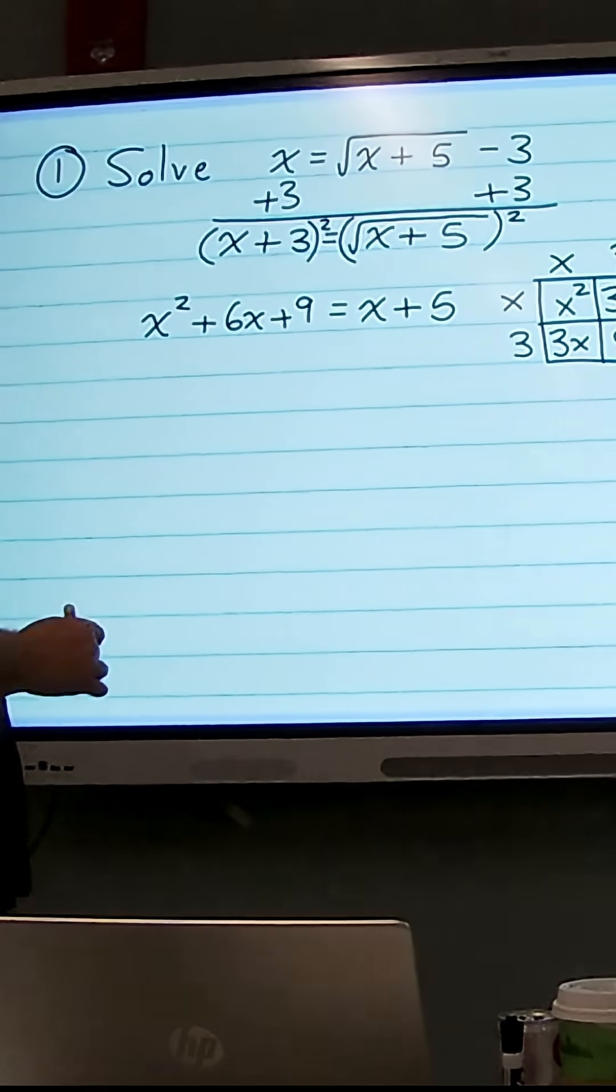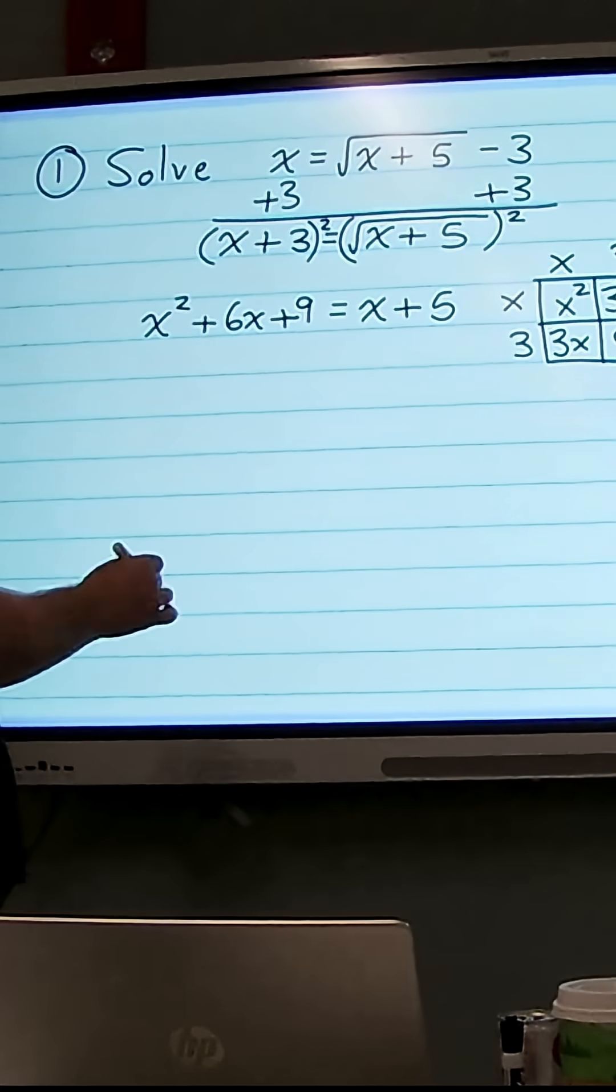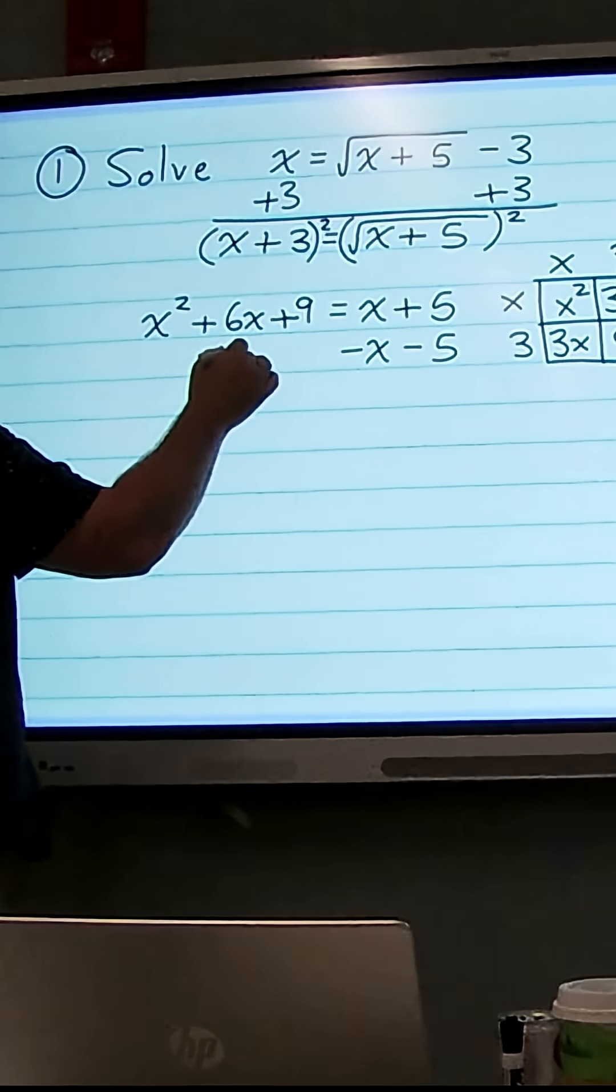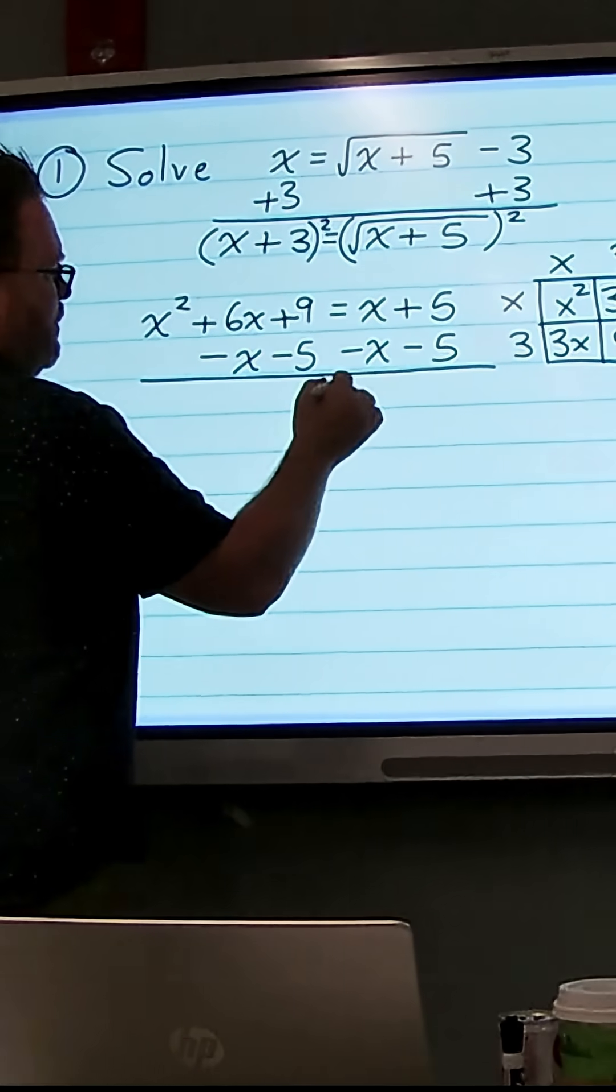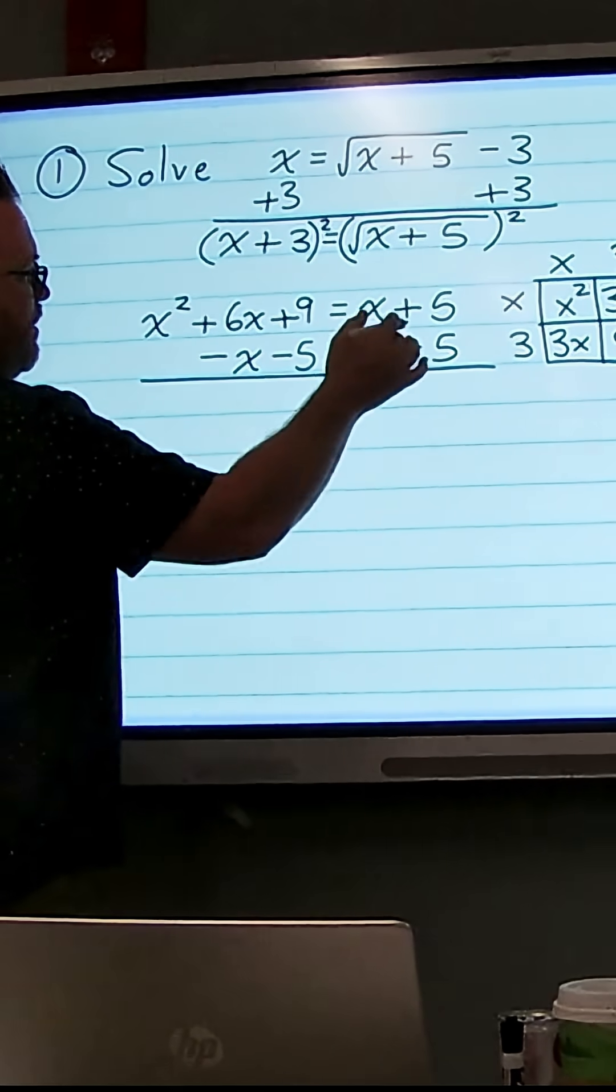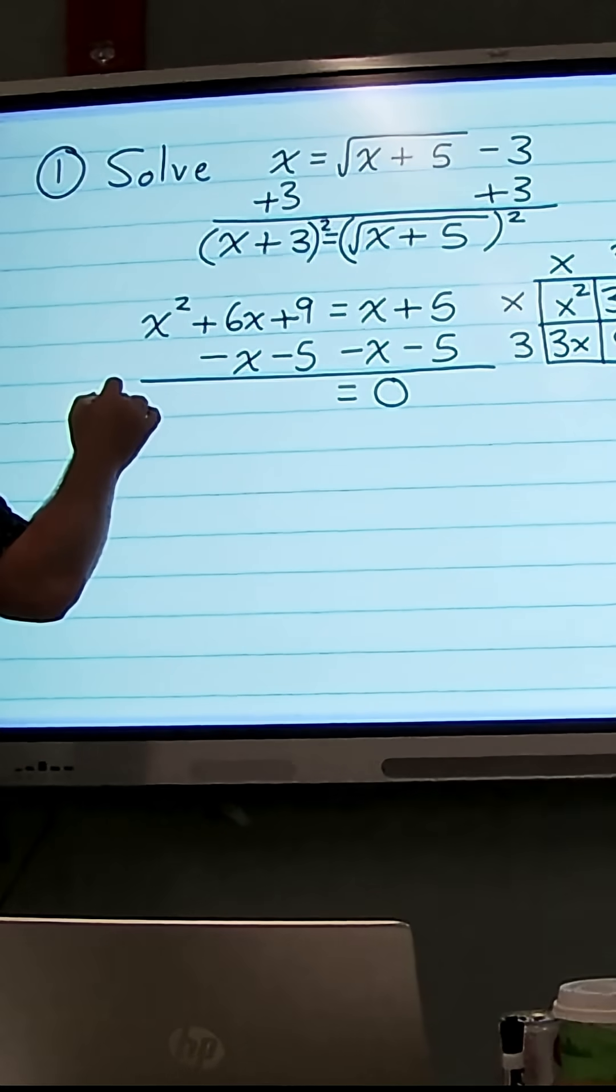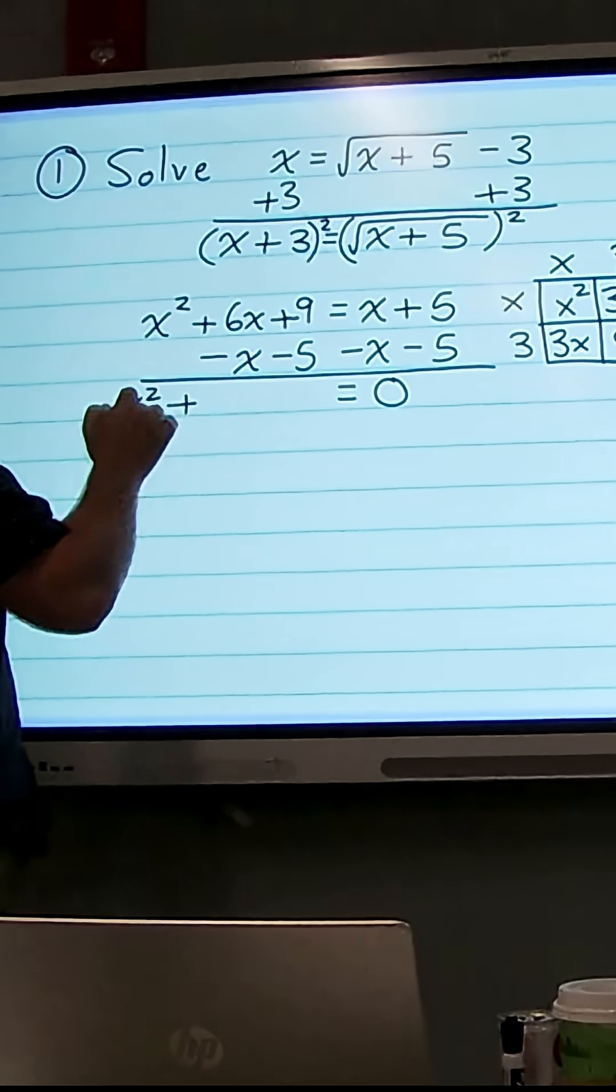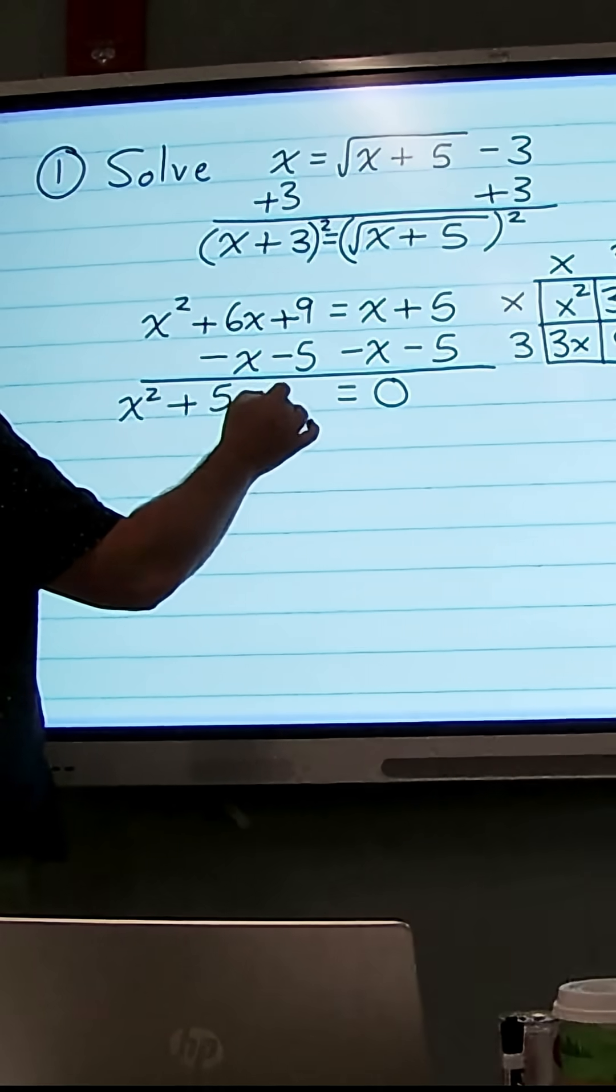Now I want to get one side equal to 0, so I'm going to subtract x and I'm going to subtract 5 from both sides. On the right-hand side x minus x is 0, and 5 minus 5 is 0, so we're left with 0. On the left-hand side we have x squared plus 6x minus x, which is 5x, plus 9 minus 5, which is 4.